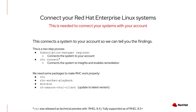First, you run the command subscription-manager register to connect the system to your account. Then you run the rhc connect command, which connects your system to Insights and enables remediation. In order to make RHC work properly, some additional components are needed. Not all marketplace images include RHC, as it is a newer package released as part of Red Hat Enterprise Linux 8.4 as a technical preview and fully supported as part of RHEL 8.5. The rhc-worker-playbook package contains Ansible Playbooks that make the connection magic happen. And since we want to run a playbook, we also need Ansible. Note that the version of Ansible included for Red Hat Enterprise Linux is only for limited-use automation for purposes like RHC, Insights Playbooks, and System Roles.